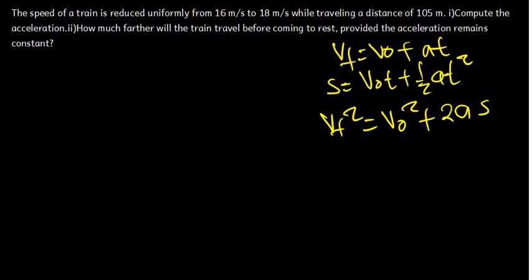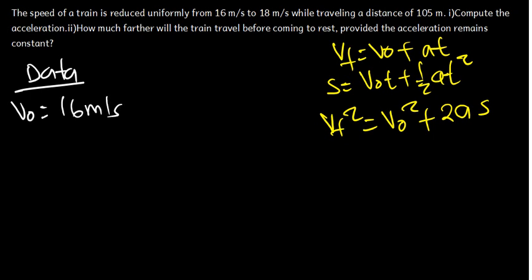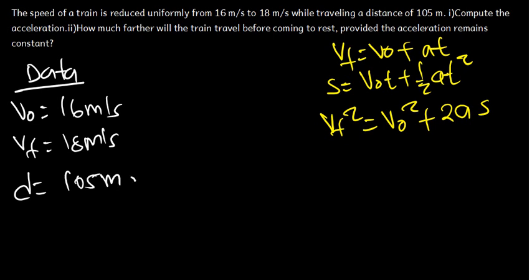After reading the question, we need to extract the data, which will help us know which equation to use. From here, we can see that we have the initial velocity of 16 meters per second, the final velocity of 18 meters per second, and we have been told the distance covered was 105 meters. The question asks us to compute the acceleration.